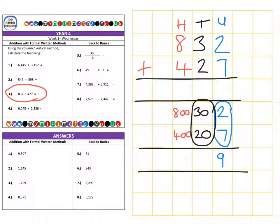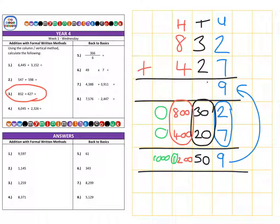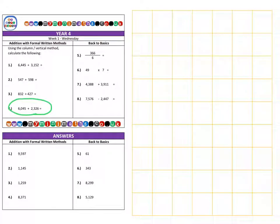Then we have 30 add 20 which is 50. And finally we have 800 add 400 which is 1,200. And what we can do with this thousand like on the previous question, it can be carried over into the next column because we don't have any other thousands to add to it. So this gives us a final answer of 9 units, 5 tens, 200, and 1,000 for a final answer of 1,259.